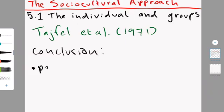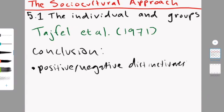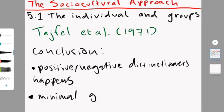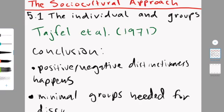So possible conclusions that can be made based on this study is that positive and negative distinctiveness does actually happen and that discrimination can happen within minimal groups.